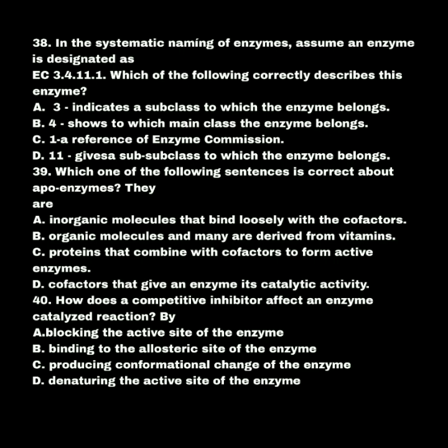Question number 40. How does a competitive inhibitor affect an enzyme catalytic reaction? A. By blocking the active site of the enzyme. B. Binding to the allosteric site of the enzyme. C. Producing conformational change of the enzyme. D. Denaturing the active site of the enzyme. The answer is A: blocking the active site of the enzyme.